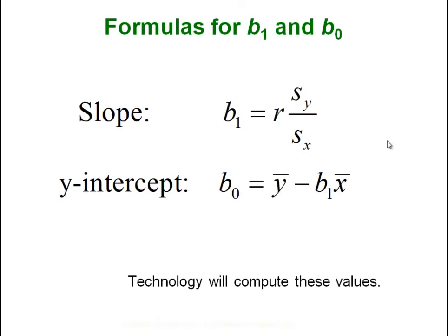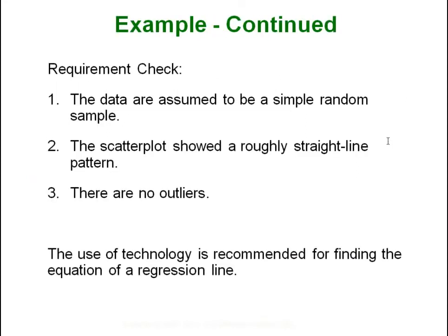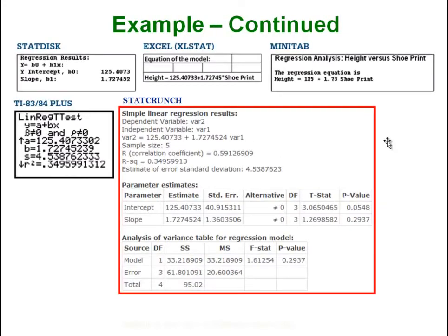There are very simple formulas for calculating both b-one and b-sub-zero, but it is easiest to just let technology do it for us. Back to the same sample of five shoe print lengths and heights that we had before. After running through the requirements, when we ran the examples both on our calculator and in StatCrunch we got the following results. You can see that r-squared here is the same r-squared there, and the values a and b correspond to our intercept and slope.